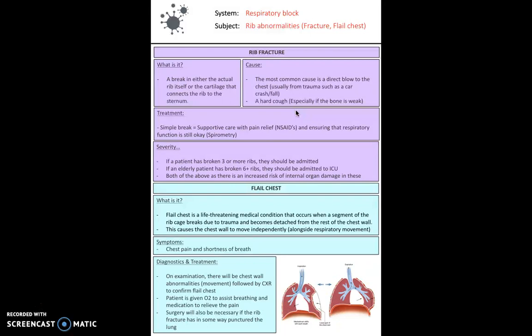In terms of treatment, because it's quite a simple break, usually you can support this patient just simply with pain relief, so NSAIDs, and ensure as well that their respiratory function is okay. Ensure there's no complications, so for example, it's not punctured the lung underneath. So a good way to assess this is that if a patient's broken three or more ribs, they should be admitted to hospital. If it's an elderly patient that's broken six or more ribs, they should be admitted to ICU. And the reason we do that is because there's a risk of internal organ damage. So for example, that rib fracture could have punctured the lung underneath.